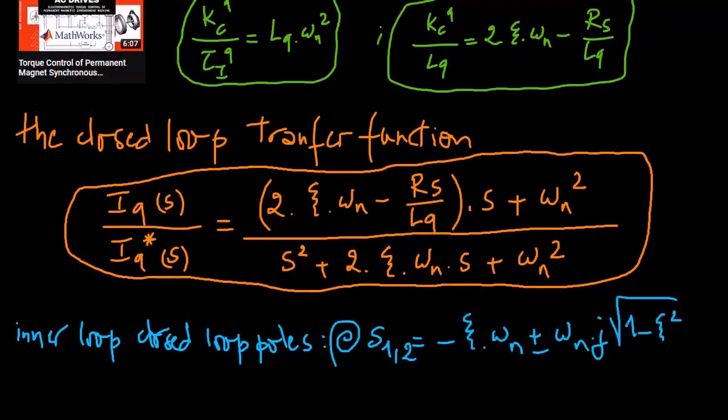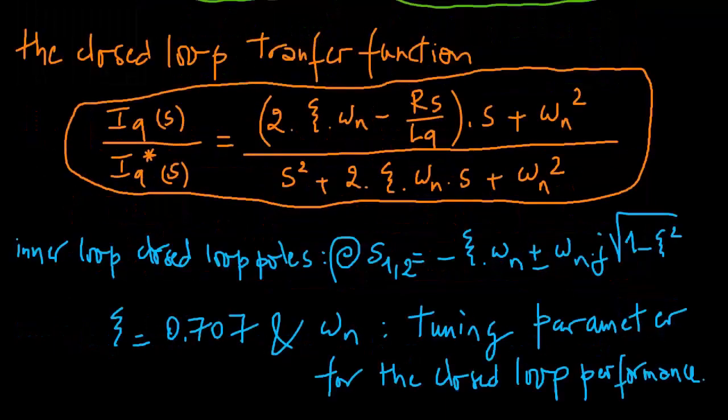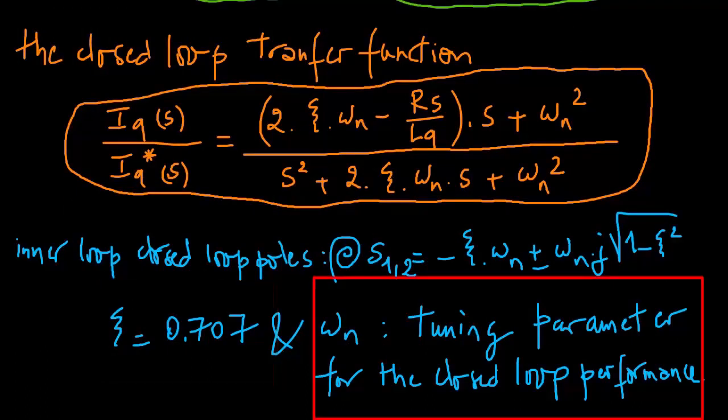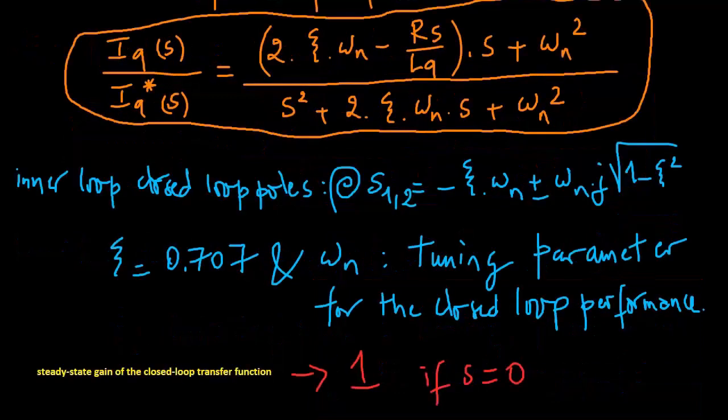When examining a loop, the closed-loop poles are found with zeta being 0.707, and omega-N acting as a tuning parameter affecting closed-loop performance. The steady-state gain of this closed-loop transfer function remains consistent at unity when setting S to 0 in this function.